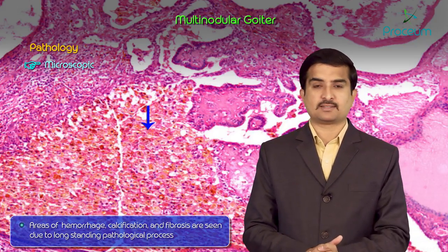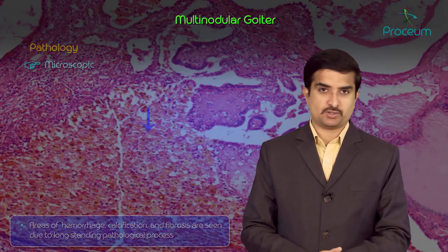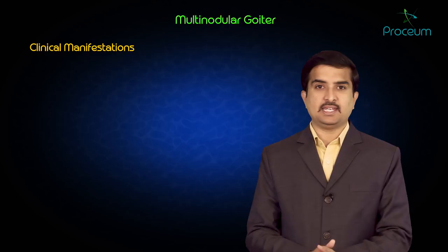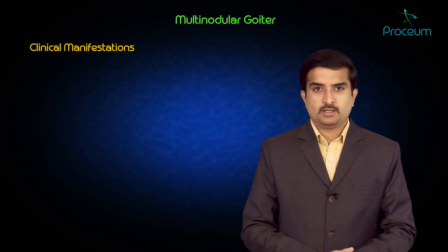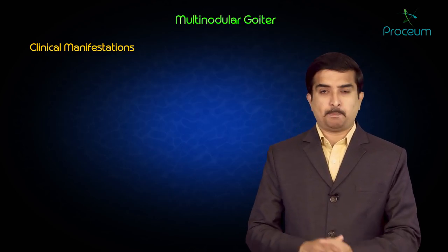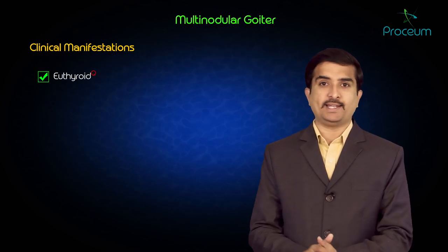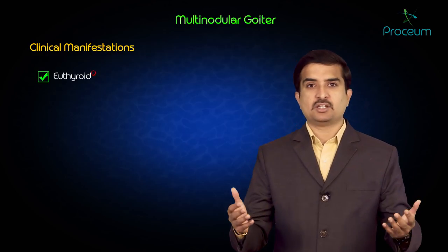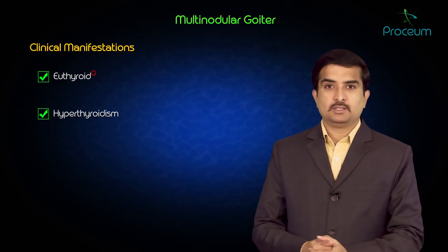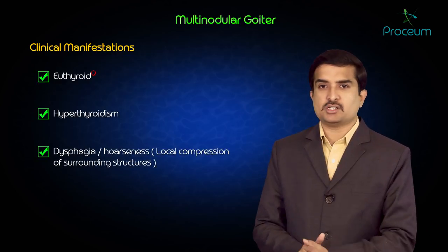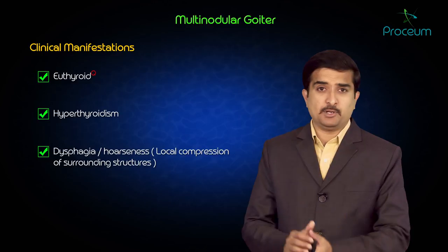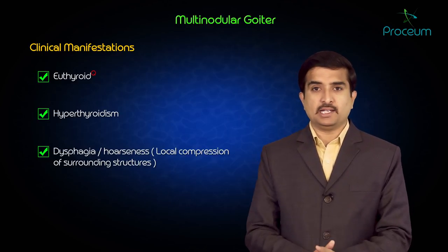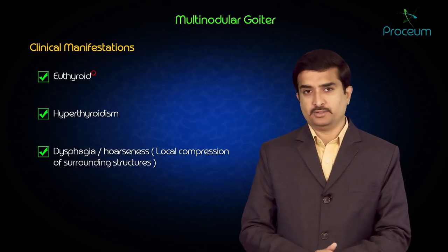Regarding clinical manifestations: patients with multinodular goiter are usually euthyroid, but a few may present with hyperthyroidism. Patients may also present with dysphagia and hoarseness, mainly due to local compression of surrounding structures — most commonly the recurrent laryngeal nerve.